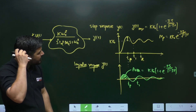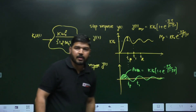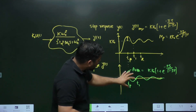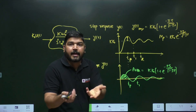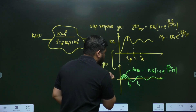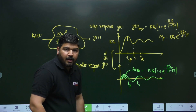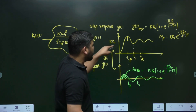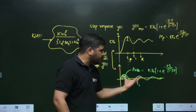Now for the impulse response — the impulse response looks like this. The interesting part is that this graph is just the differentiation of the step response, because we know that an impulse is the derivative of a step. So if you differentiate the step response you reach the impulse response, or equivalently, if you integrate the impulse response you get back the step response.